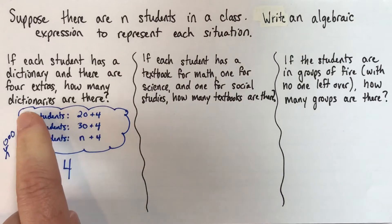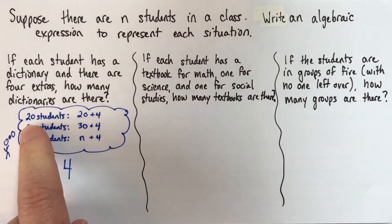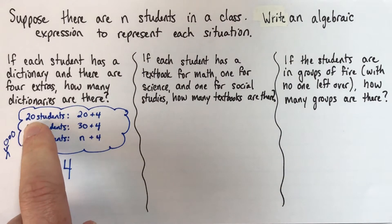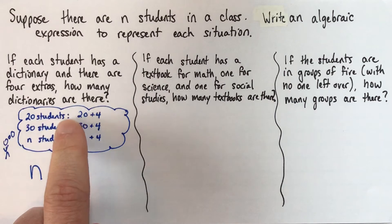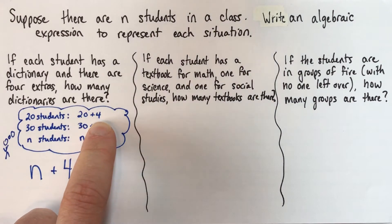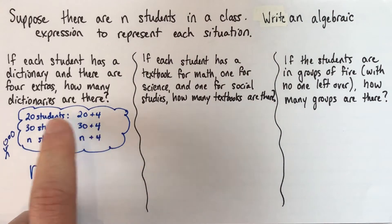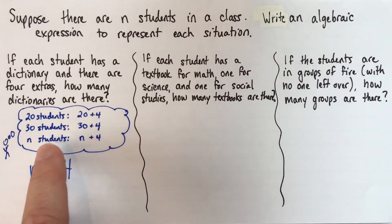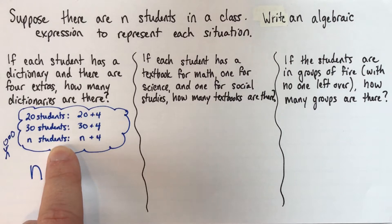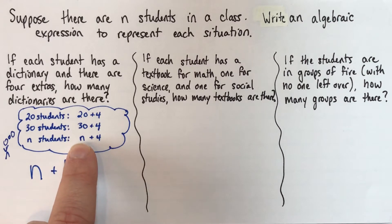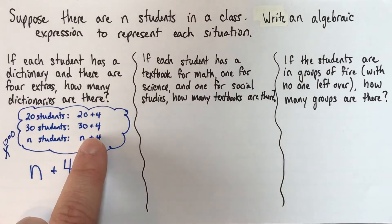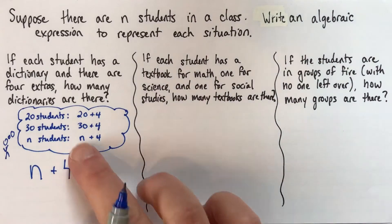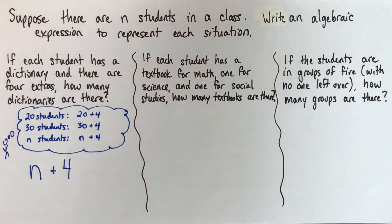The strategy we used here is to imagine different numbers and think: what would we do with that number? So if we had 20 students, how would we figure out how many dictionaries? We'd add 4. Then we look for the pattern — every time it's the number of students plus 4. So that helps us write the expression: n plus 4. That's the strategy we'll use for each of the three questions.